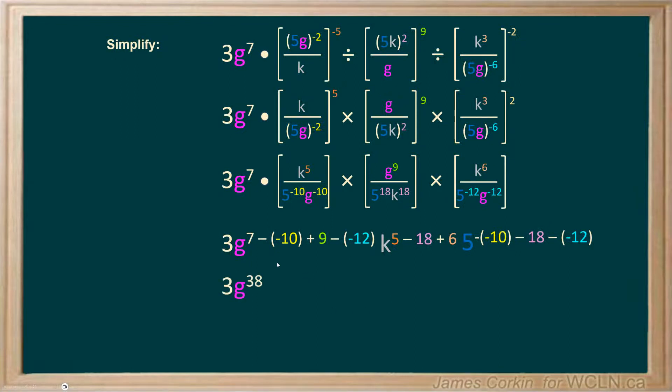Let's do the math on this. This combination ends up being 38. This combination ends up being negative seven. And this combination, once you put it together, ends up being four. Then you would take all of your numbers. So we have a three and a five to the power of four. Five to the power of four multiplied by three ends up being 1875. You can see the G to the 38. And then if you have a negative exponent, you should move that back into a denominator and make it a positive exponent.